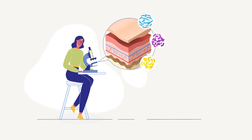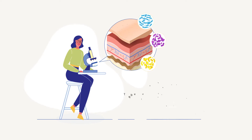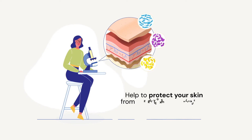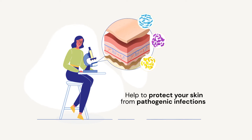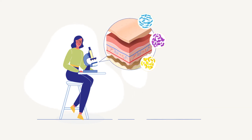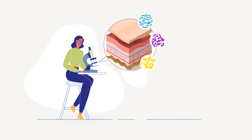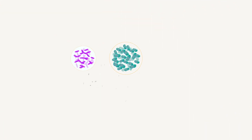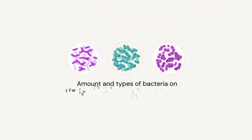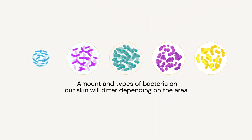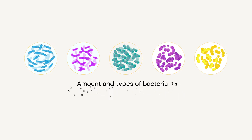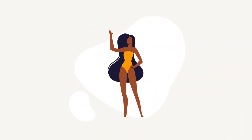These different kinds of bacteria also help to protect your skin from pathogenic infections and will even ward off transient bacteria from outside sources. However, the amount and types of bacteria on our skin will differ depending on the area, and they can be categorised into three different areas.